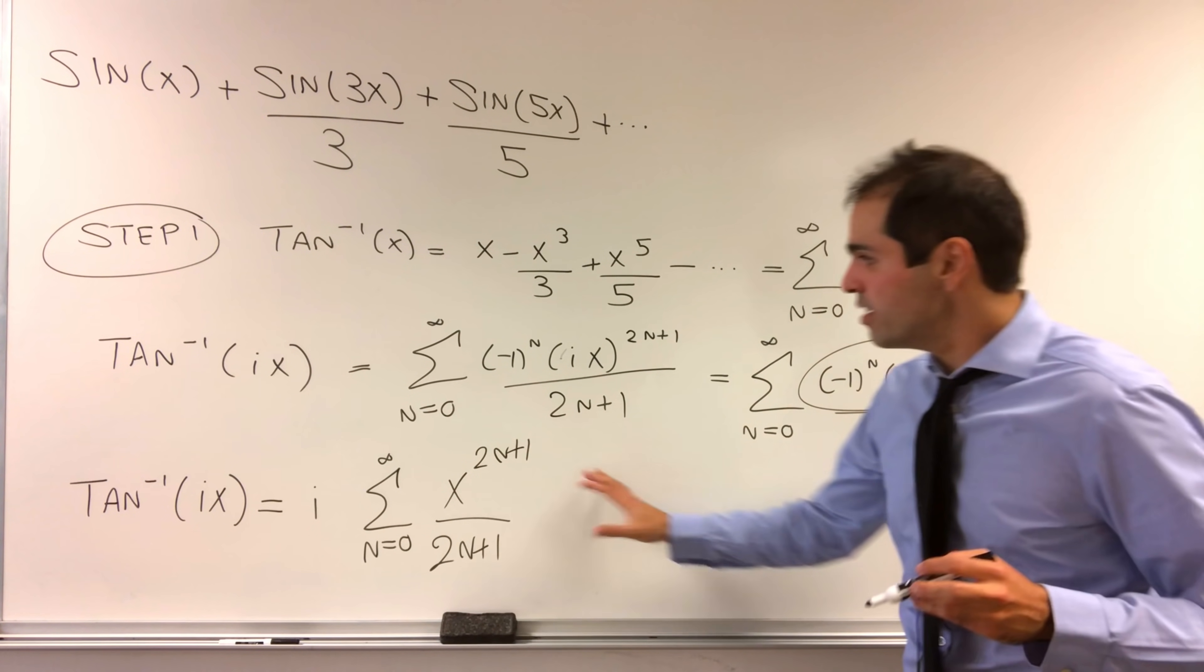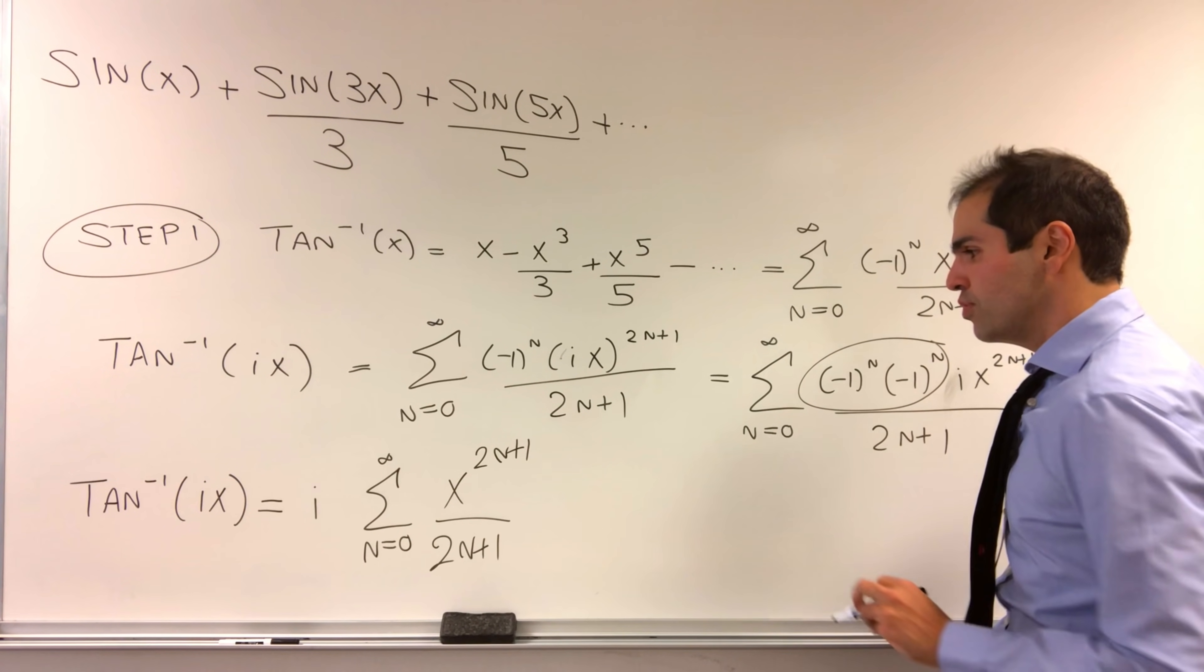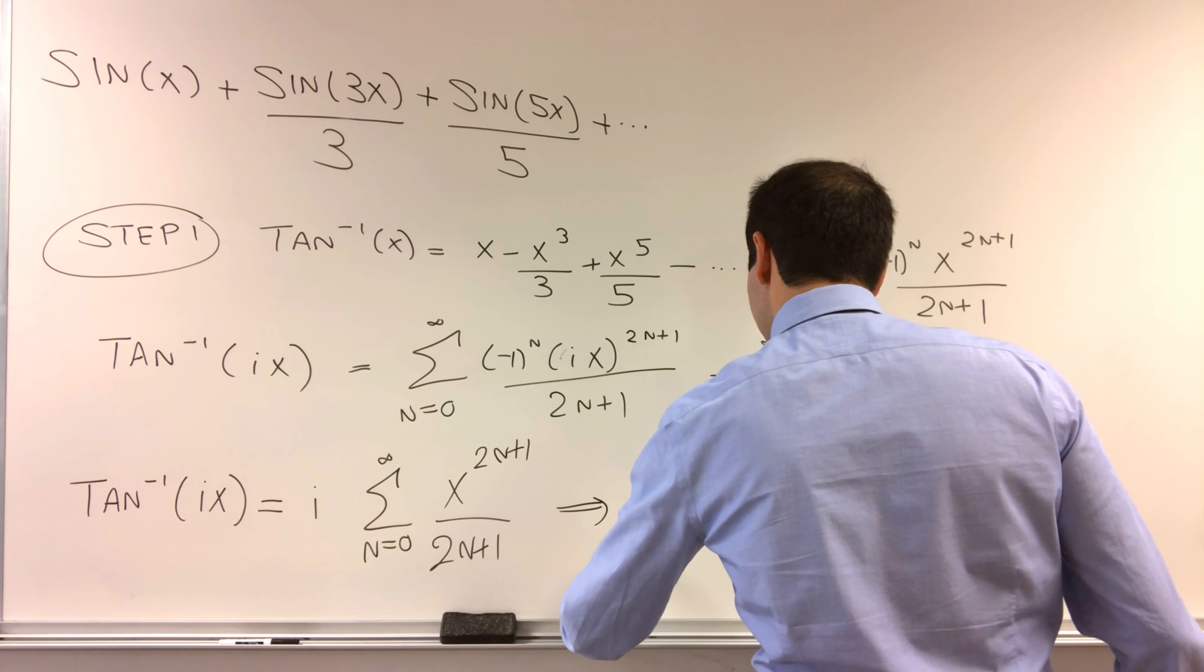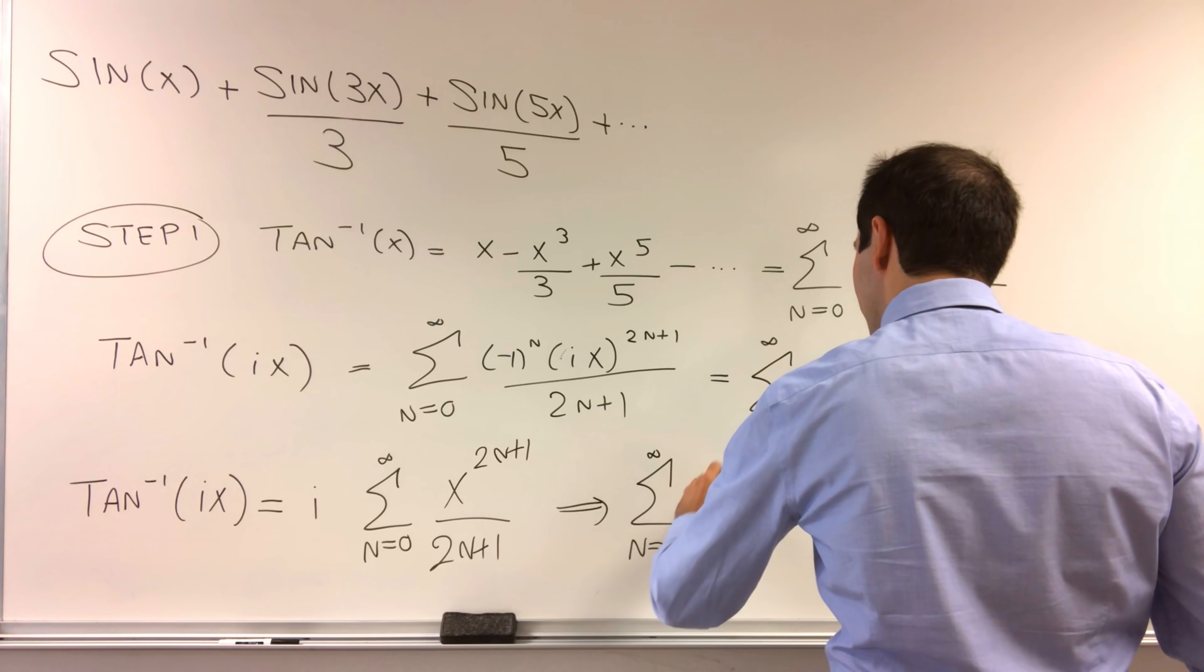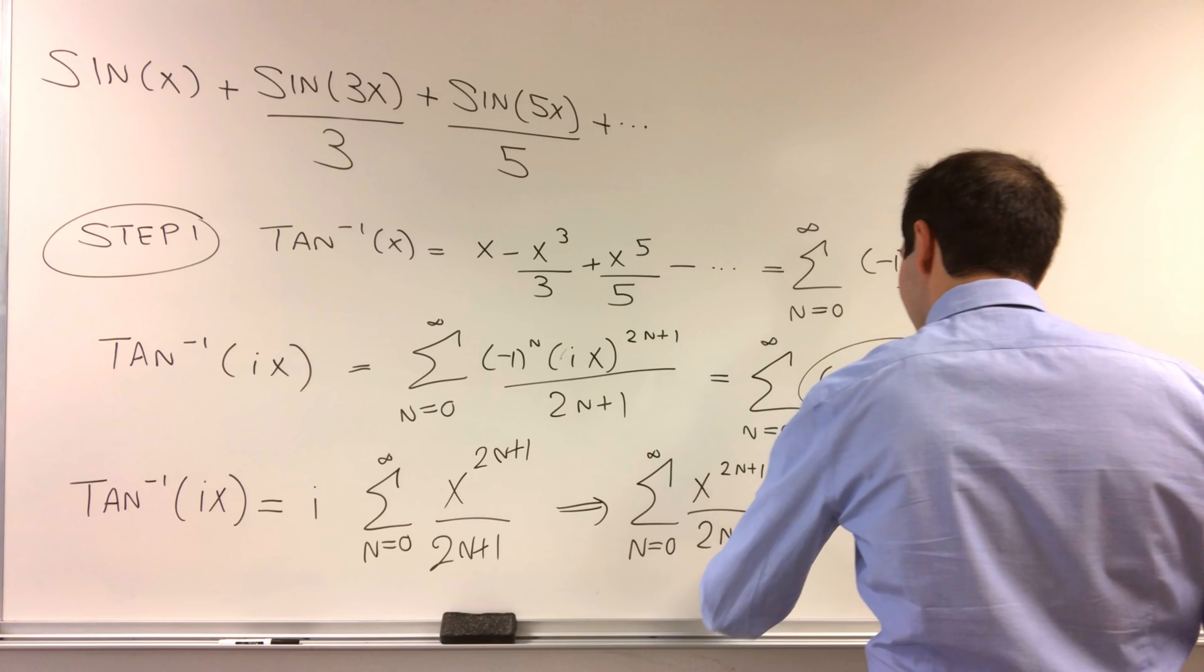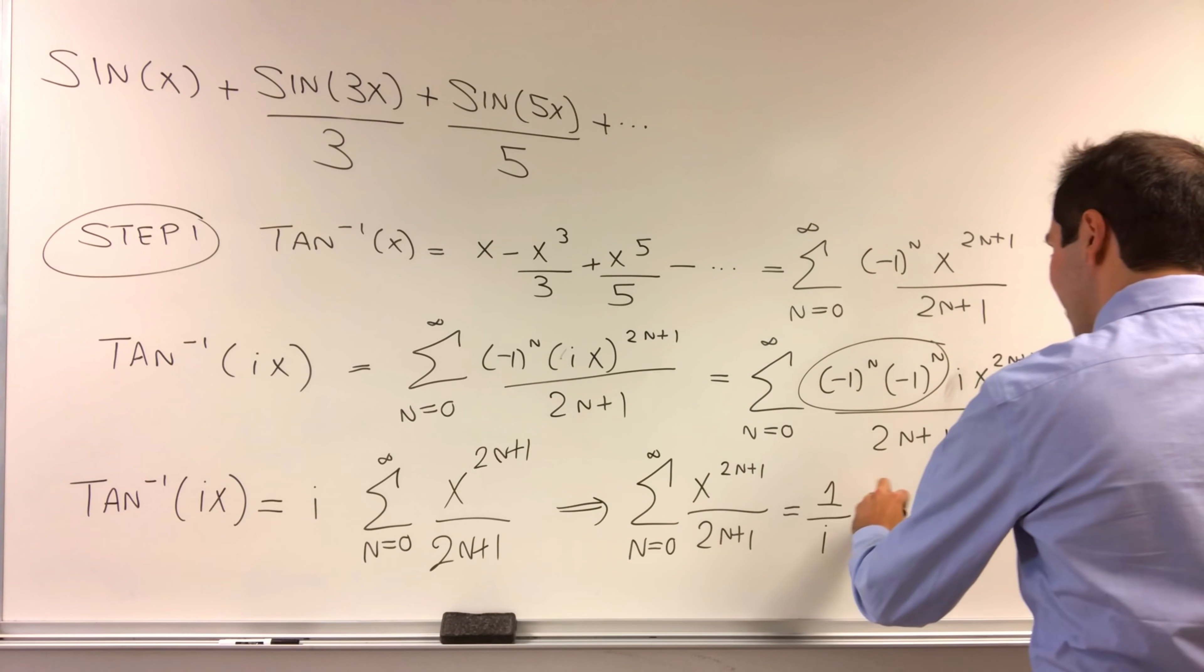This is amazing because, well, now we can solve for this sum of x to the odd powers to get sum n from 0 to infinity, x to the 2n plus 1 over 2n plus 1, then becomes 1 over i arctangent of ix.